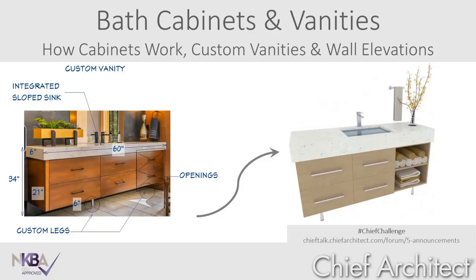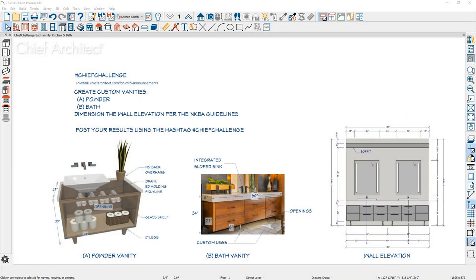I'm going to share my screen. I'll cover how cabinets work in Chief Architect, then create these two custom vanities to show various cabinet tools, and then cover how to create clean wall elevation dimensions per the National Kitchen and Bath Association's guidelines. You can complete these same steps using our Chief Challenge plan, downloadable from our user forum, Chief Talk. I'd encourage you to follow these steps and post your results using the Chief Challenge hashtag on social media.